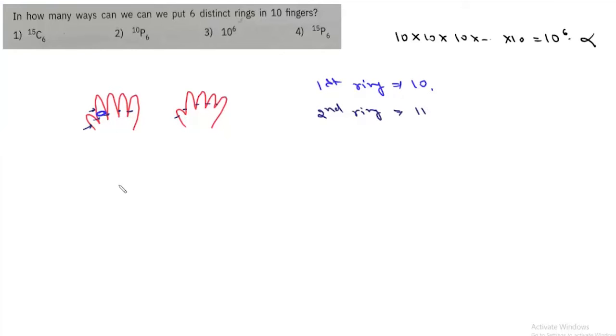Now the second ring can be put either on the same finger as the first ring - this first case is when these two rings are put on the same finger - or we have this other case when the two rings are placed in two different fingers.